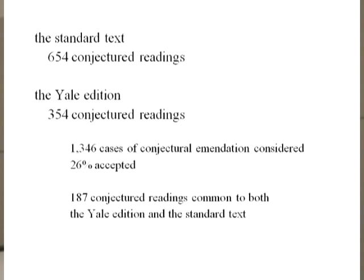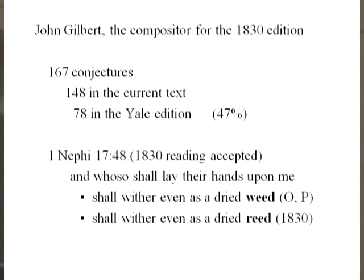It's worth noting that the Yale edition and the 1981 edition agree on 187 conjectures. John Gilbert, the compositor for the 1830 edition, made 167 conjectures, with a rather high acceptance rate of 47% — basically because he had a lousy reading in front of him, something had to be done, and he pretty well guessed right.